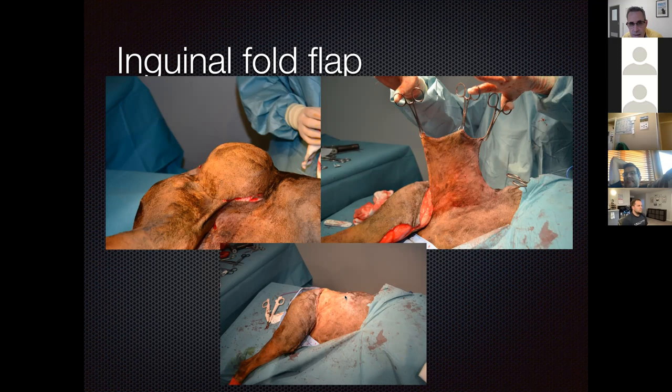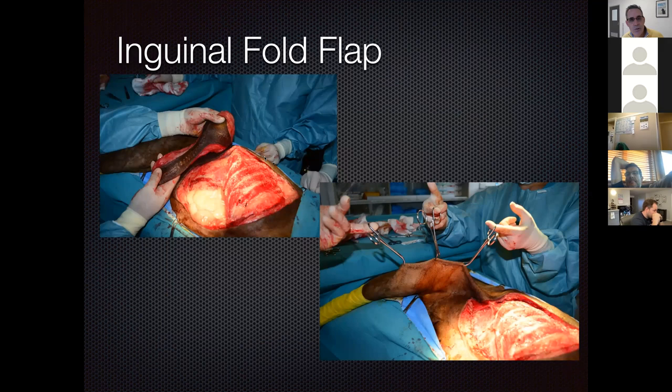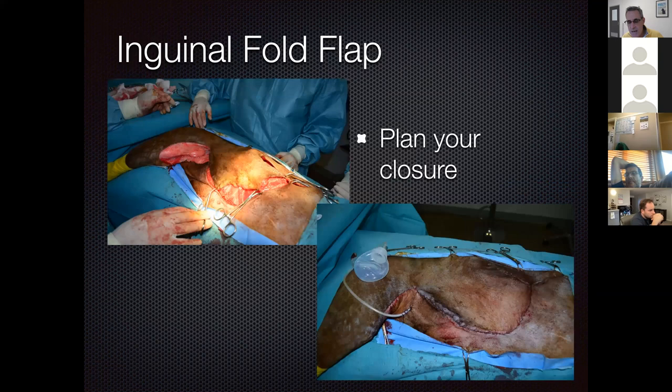For a wound on the lateral thorax, the flank fold flap is a versatile option. After obtaining clean margins down to the chest wall and closing the abdominal wall primarily, a flank fold flap taken from the front of the thigh can close even a very large thoracic defect. The flap is massive, elastic, and works extremely well. Due to the size of the defect, a closed suction drain was placed. If a drain is used, use closed suction only.